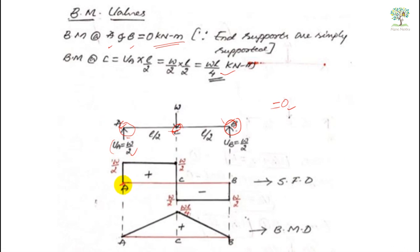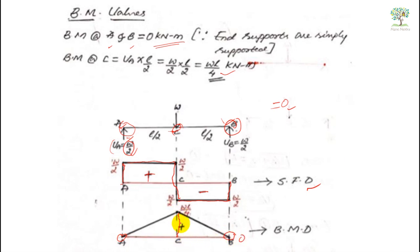To draw the shear force diagram, first draw a baseline representing points A, B, and C. Initially shear force is zero. VA pushes upward by W/2, so it rises to plus W/2. From A to C it remains constant. At C, W pushes downward so it drops to minus W/2. From C to B it remains constant. At B, VB pushes it back to zero. Above the baseline is positive, below is negative. For the bending moment diagram, draw a baseline for A, B, and C. BM at A and B is zero; at C it is WL/4. Since bending moment varies linearly, connect the points with straight lines. That completes the bending moment diagram.